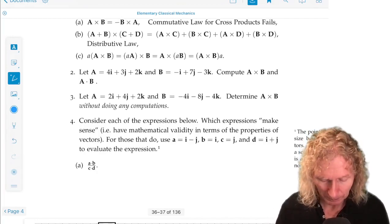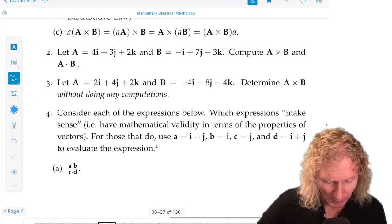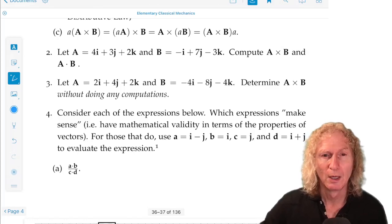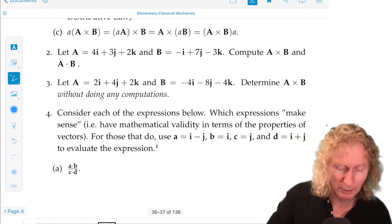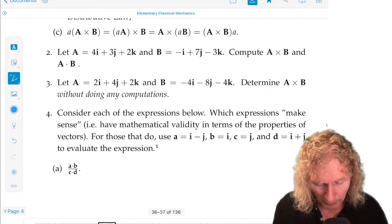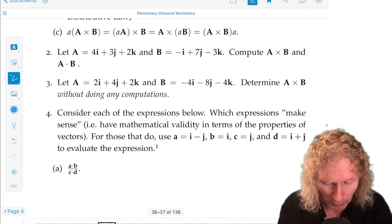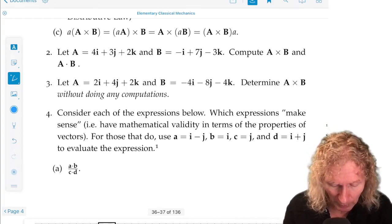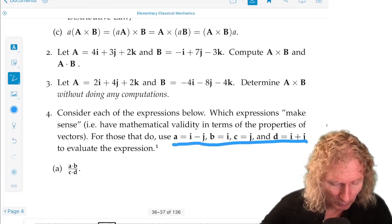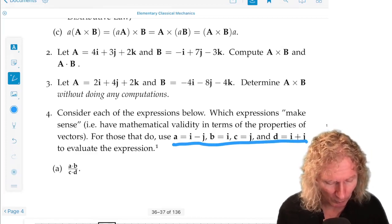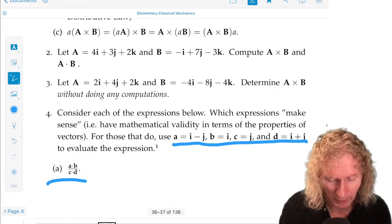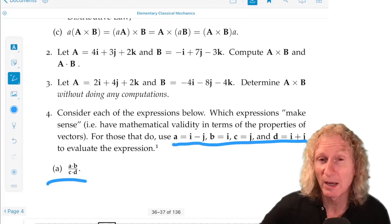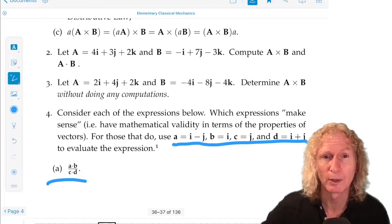Problem 4 is one I really like. So it all concerns vector expressions involving scalar multiplication, cross products, division by scalars, and so on. So we have four concrete vectors, lowercase a, lowercase b, lowercase c, expressed in terms of i and j. So on this page, you only see one particular expression, but there's more to come. So I ask you, which expressions make sense? By that I mean, which have mathematical validity in terms of the properties of vectors?